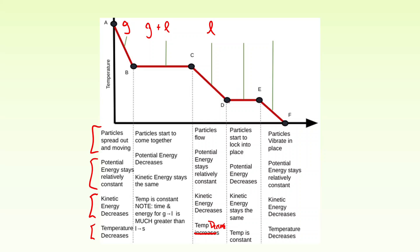In section DE on the cooling curve, all of the liquid has cooled down and reached its melting point, so we start to get liquid and solid present. The particles start to lock into place, the potential energy goes down, and kinetic energy stays the same because the temperature is constant. In the last section, all that liquid has frozen and we only have the solid phase, where the particles vibrate in place. Potential energy stays pretty much the same and kinetic energy decreases because the temperature is going down.